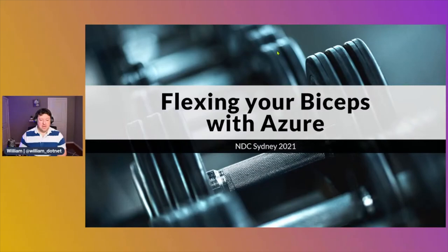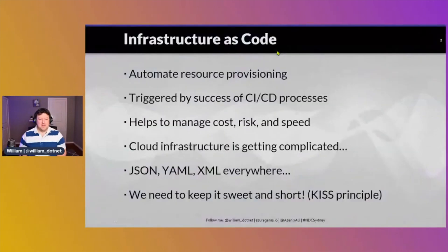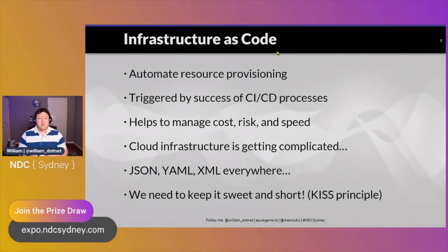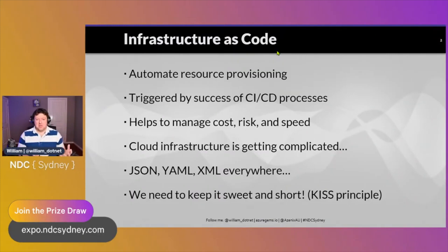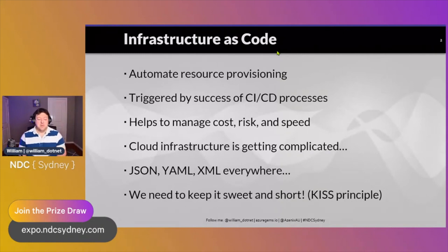I'm going to start off with a very rough definition of infrastructure as code. The point of infrastructure as code, or IaC, is to automate the provisioning of your resources in cloud. Usually now, triggered by the success of CI/CD pipelines becoming very popular, these are the tools we use to automate everything we do on the platform side and even on the build side.